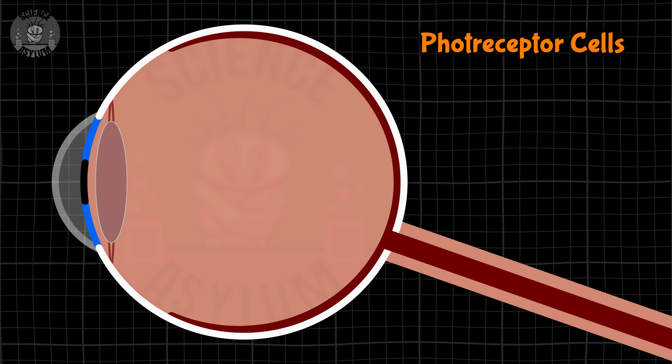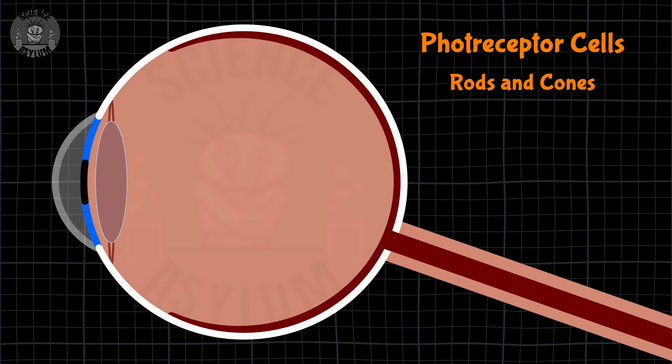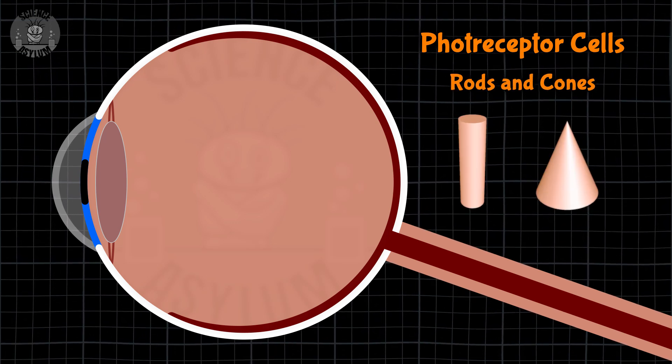Those photoreceptor cells come in two types, rods and cones, which is literally a description of their shape. The rods only detect intensity of light, so they're not really useful for color vision. The cones are where the magic happens.